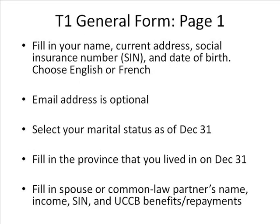On page 1 of the T1 General Form, fill in your name, current address, social insurance number, and date of birth. Choose English or French. Email address is optional. Select your marital status as of December 31st. Fill in the province that you lived in on December 31st. Fill in the spouse or common-law partner's name, income, social insurance number, and UCCB benefits or repayments.